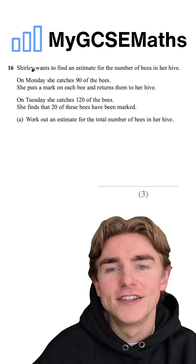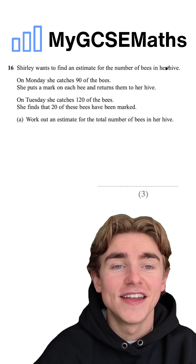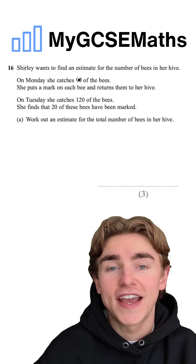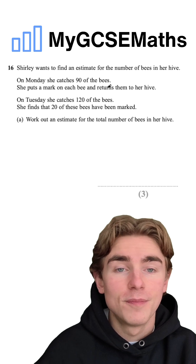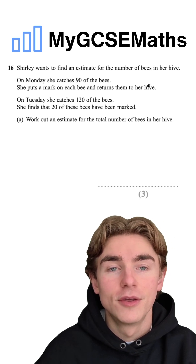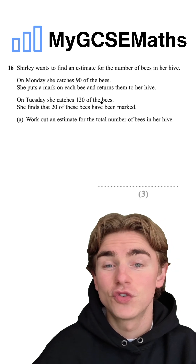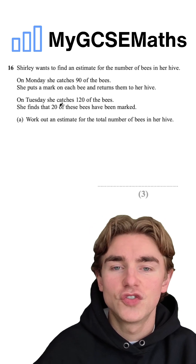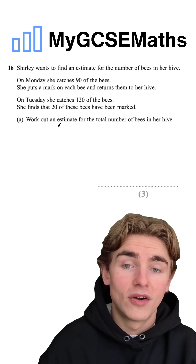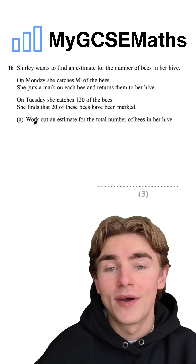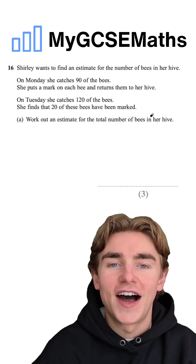The question says that Shirley wants to find an estimate for the number of bees in her hive. On Monday, she catches 90 of the bees. She puts a mark on each of them and returns them to her hive. On Tuesday, she catches 120 of them and she finds that 20 of these bees have been marked. We're asked to work out an estimate for the total number of bees in her hive.